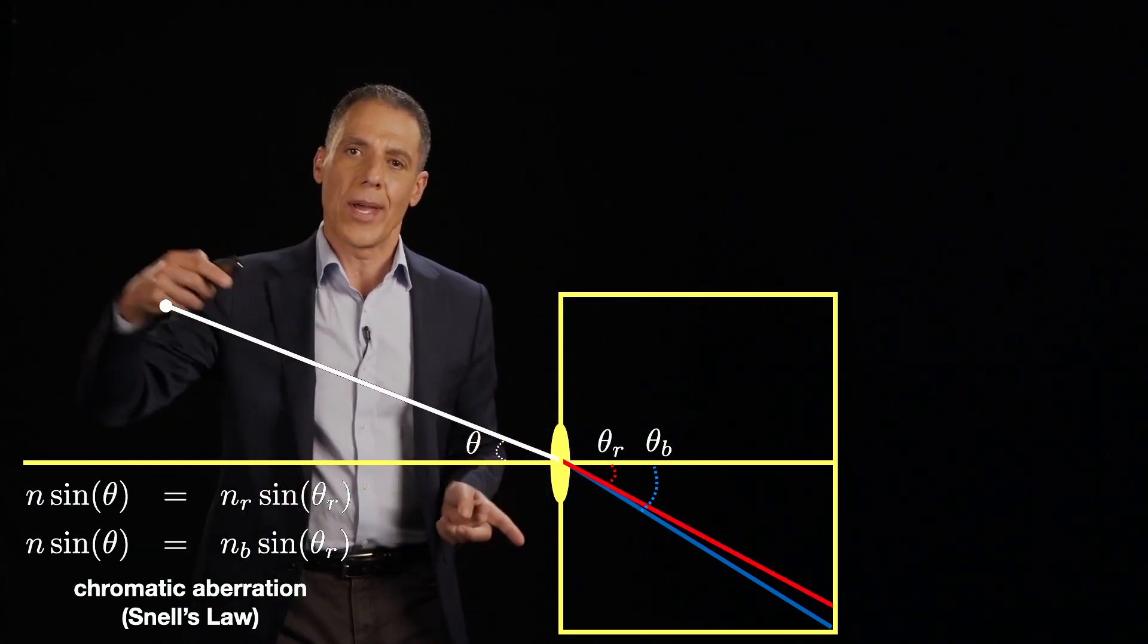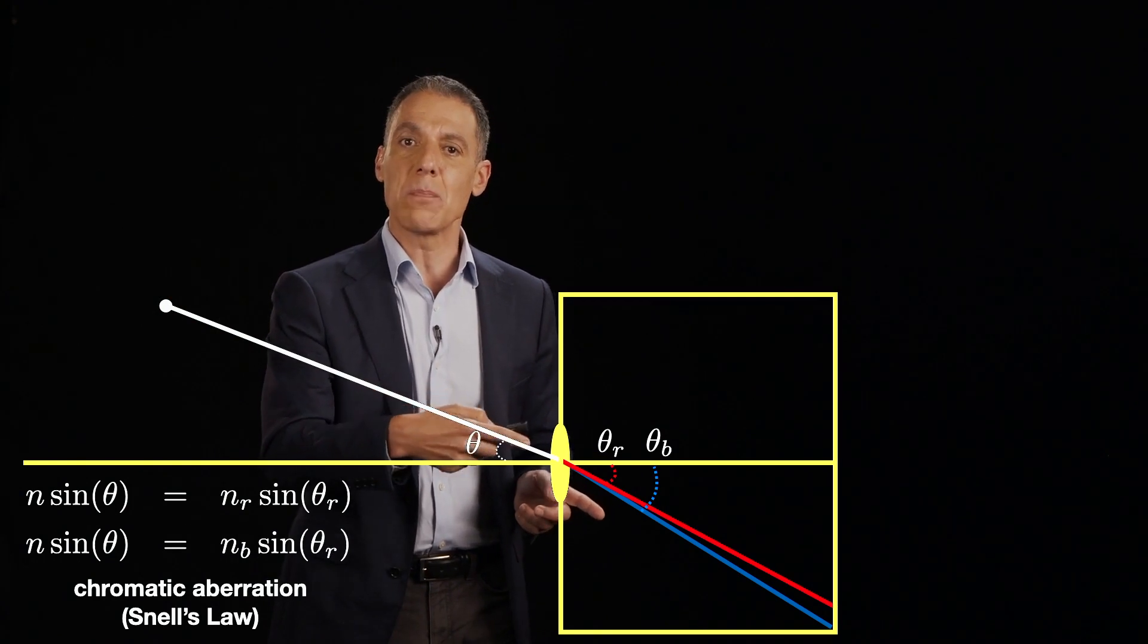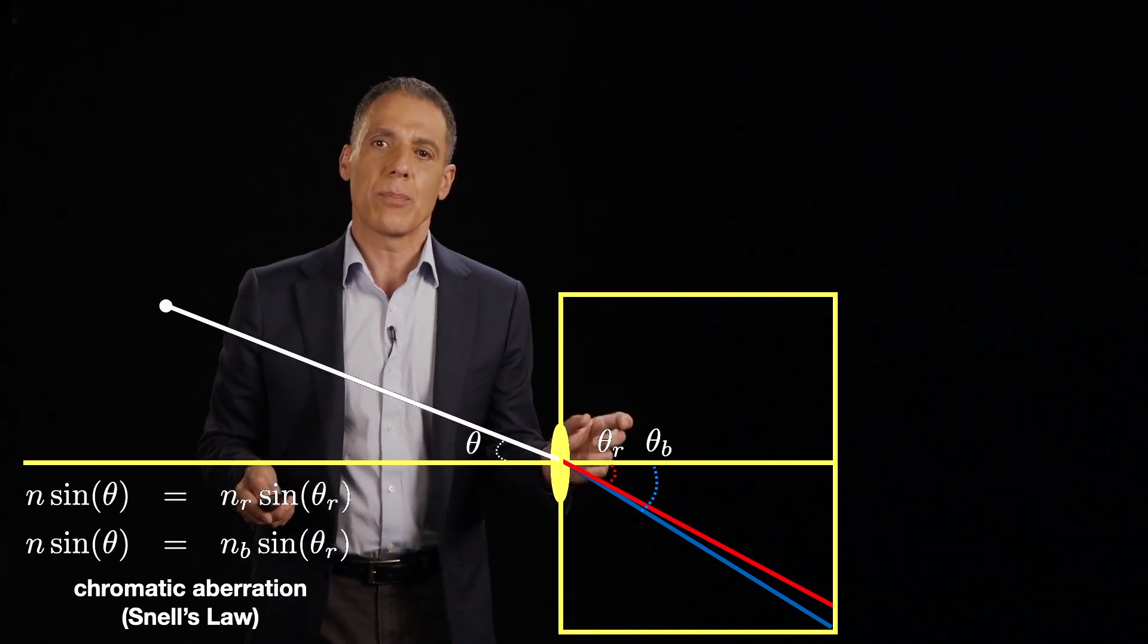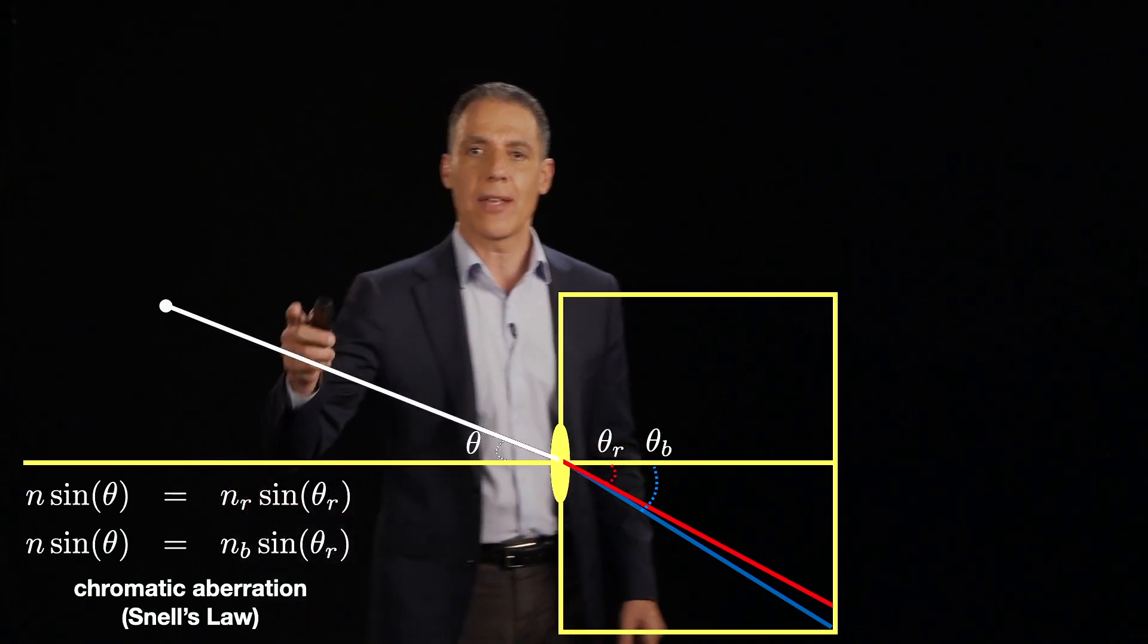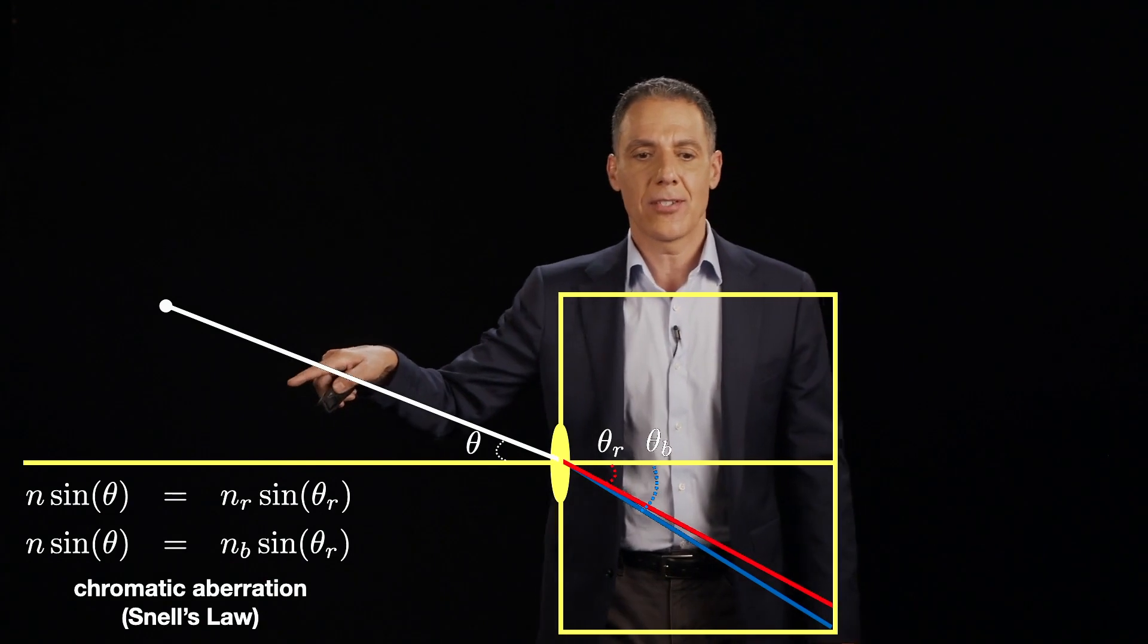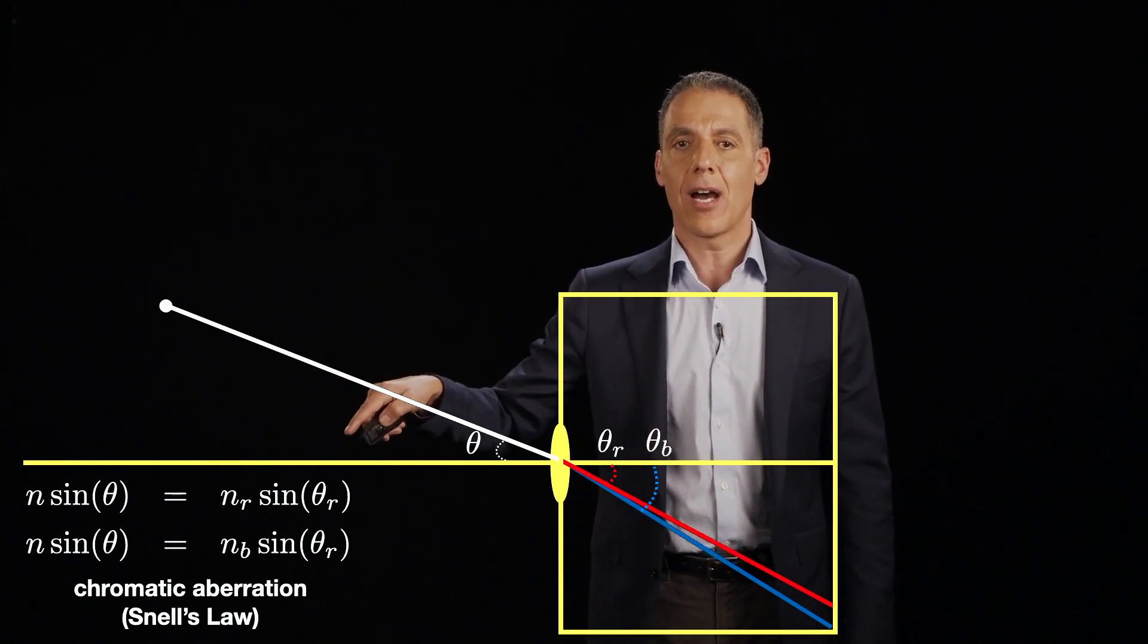But what happens when light across the color spectrum, different wavelengths, enters this medium, a lens, glass, it will bend proportional to wavelength according to Snell's law right here, which says that n sin(θ) is equal to nr sin(θr).